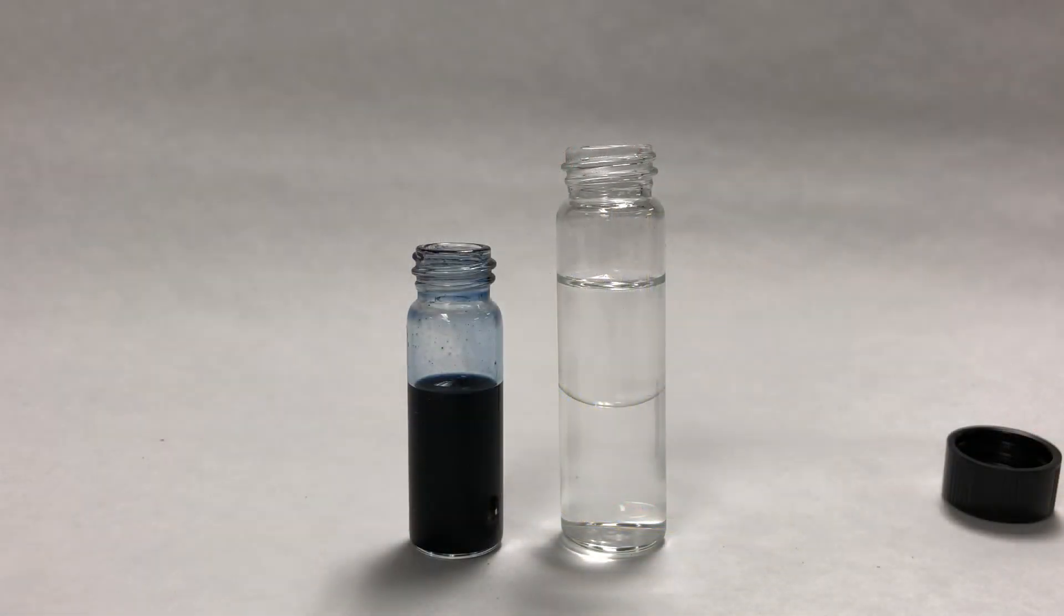When both solvents are put in the same vial, they are actually unable to mix together. Solvent A stays on the top layer because it is less dense, and solvent B is in the bottom layer.